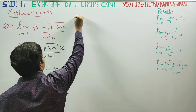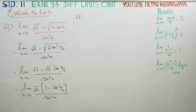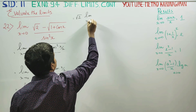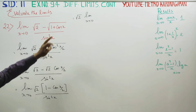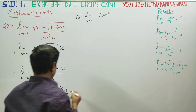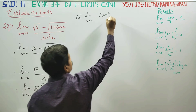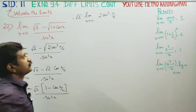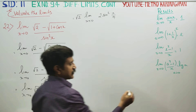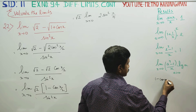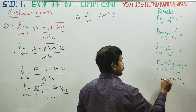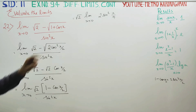After taking root 2 outside, next limit: limit x turns to 0. Using the formula 1 minus cos x equals 2 sin squared x by 2. Here, where x by 2 appears, it becomes x by 4. So 1 minus cos x becomes 2 sin squared x by 4, applying the trigonometric identity.